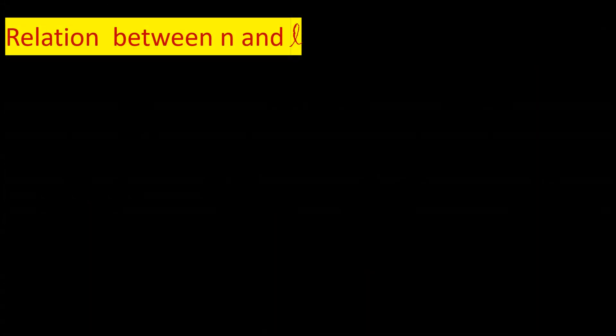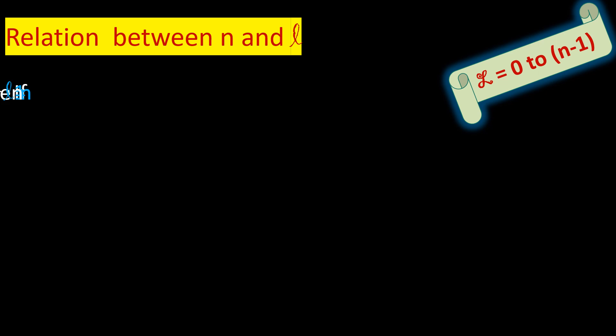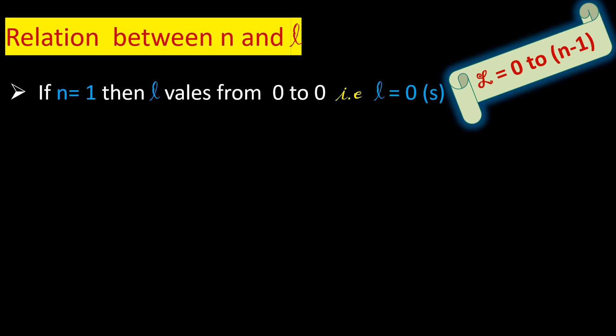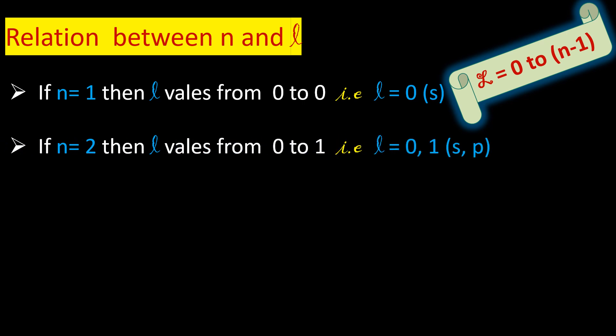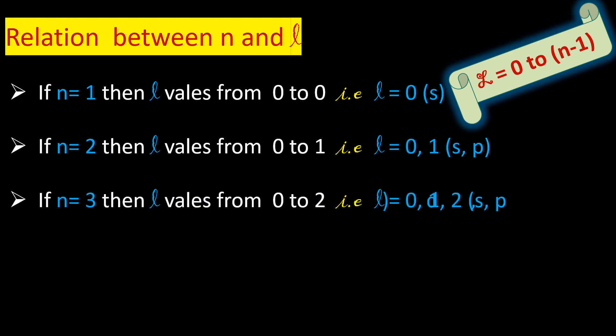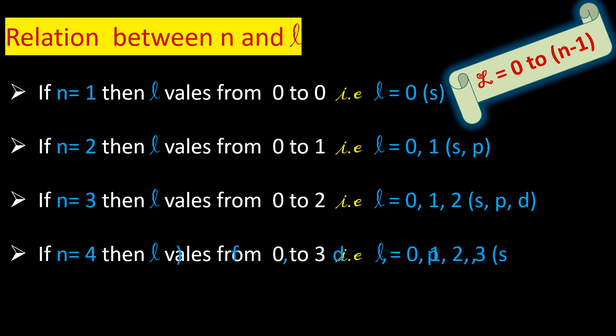How are we going to calculate these? The relation between n and L is L = 0 to n−1. If n = 1, then L has only one value: L = 0, which refers to the s orbital. If n = 2, L values are from 0 to 1, that is L = 0, 1 — meaning s and p. If n = 3, L values are 0, 1, 2 — meaning s, p, and d. If n = 4, L values are 0, 1, 2, 3 — meaning s, p, d, f.